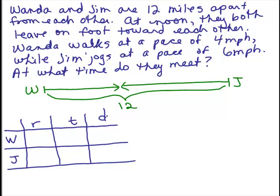So what do we know about their rates? We know that Wanda is walking at a pace of 4 miles per hour. So here's this 4. And Jim is jogging at 6 miles per hour.